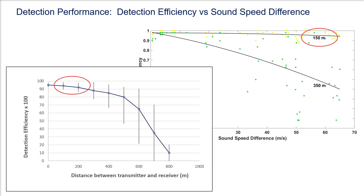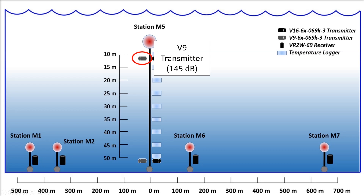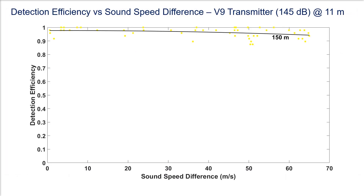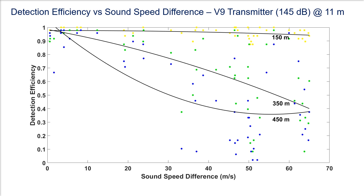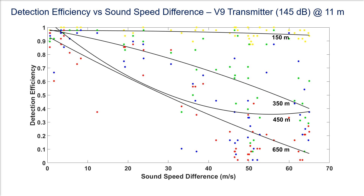Let's look at the results of our study in Eastern Lake Ontario to see how seasonal changes in thermal stratification contribute to variability in detection performance over time. Looking at the relationship between sound speed difference and detection efficiency for our V9 reference fish tag located at 11 meters depth, with a power output of 145 decibels, we see that during the thermally stratified season the tag is located above the thermocline and the receivers are below. At a transmitter-to-receiver distance of 150 meters, changes in sound speed difference have little impact. As the distance increases, detection efficiency begins to drop as the sound speed gradient gets larger, and at the largest separation of 615 meters, the effect of the thermocline on detection efficiency is very pronounced.